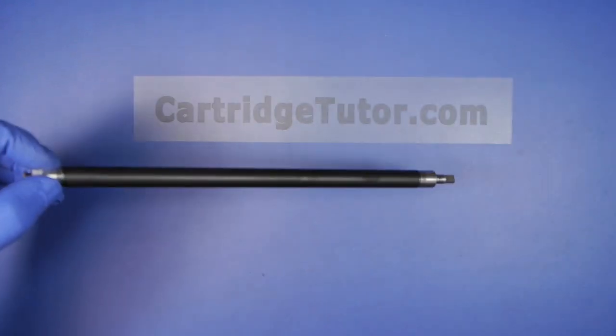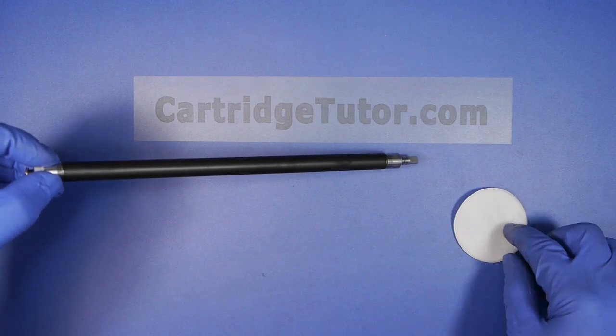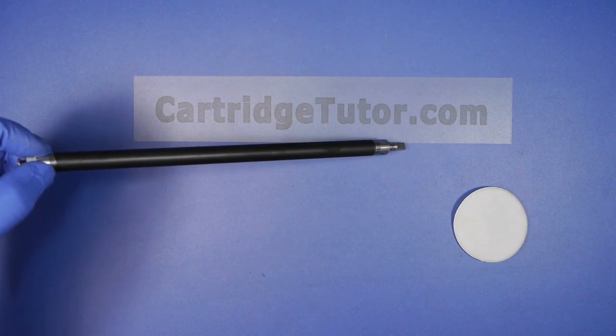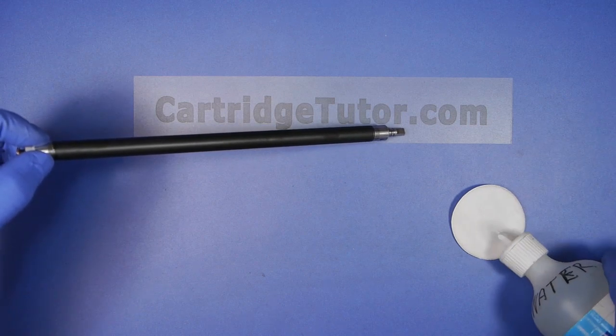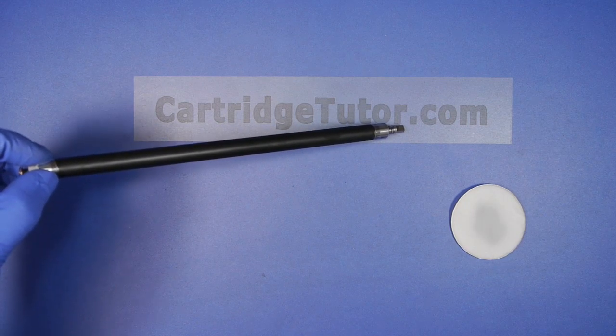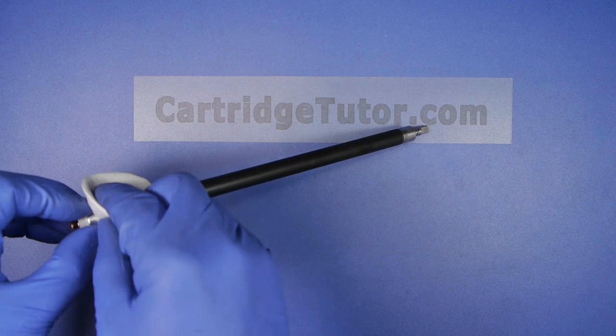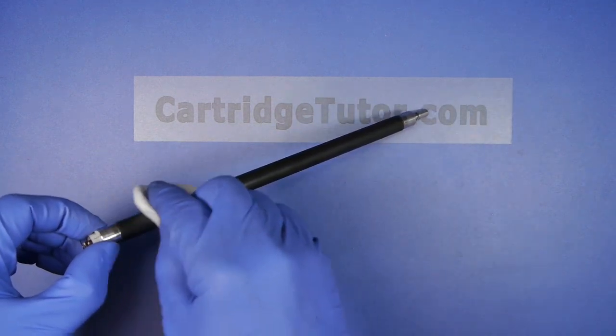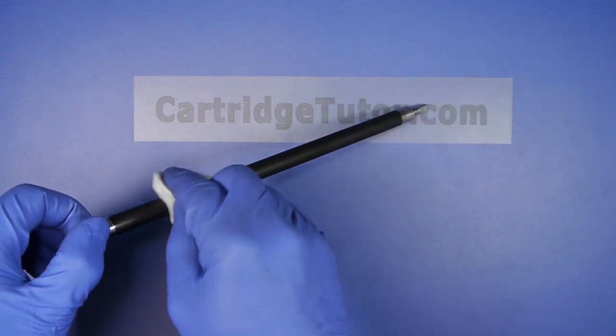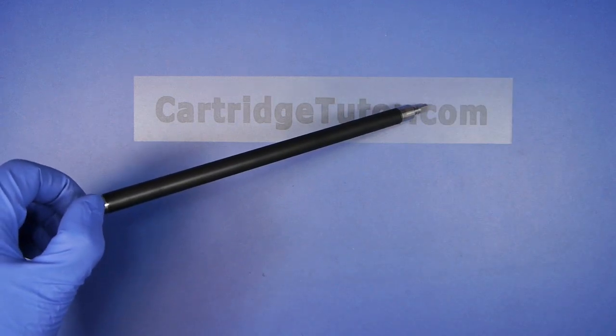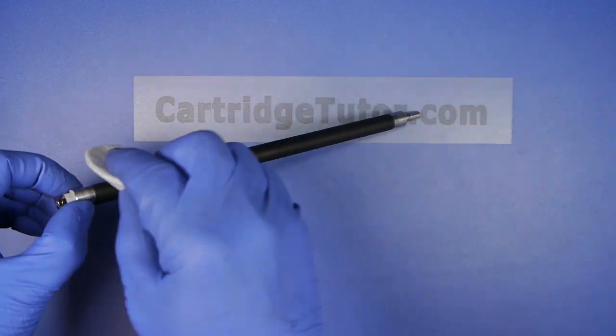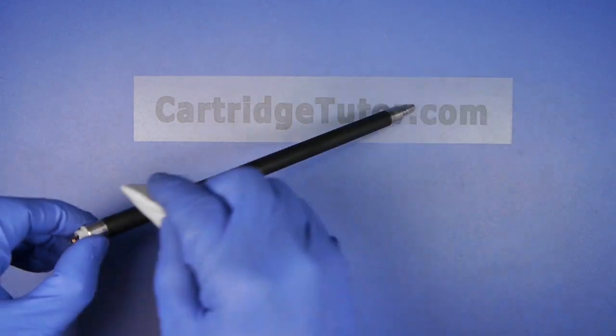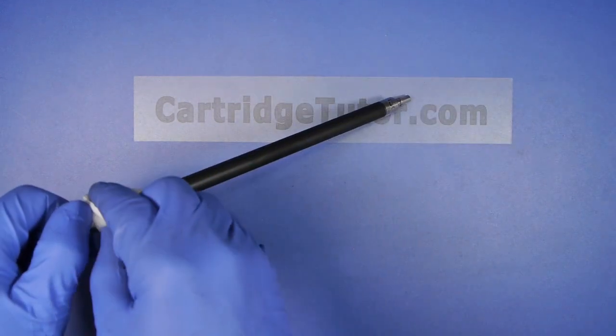After you've done that, you want to take a cotton ball with distilled water and just gently wipe the excess toner off the mag roller and any grease that may be on it. While you rotate it, then you take a dry cotton ball and wipe off the excess water.